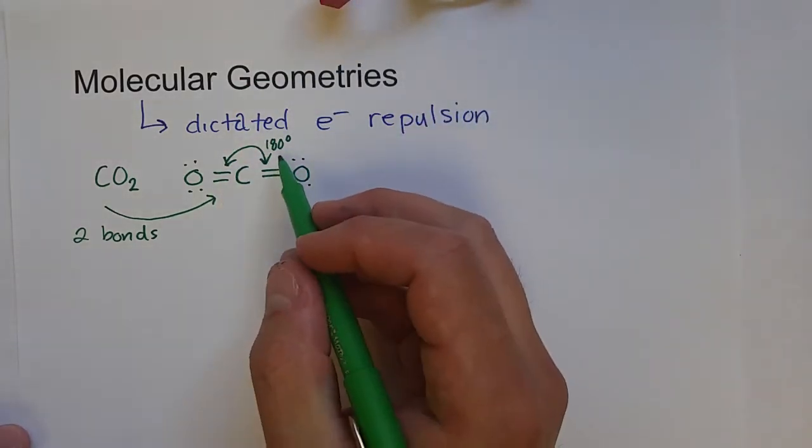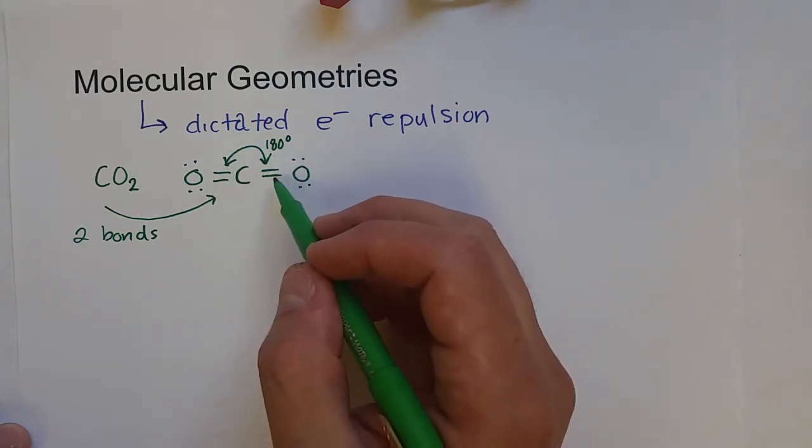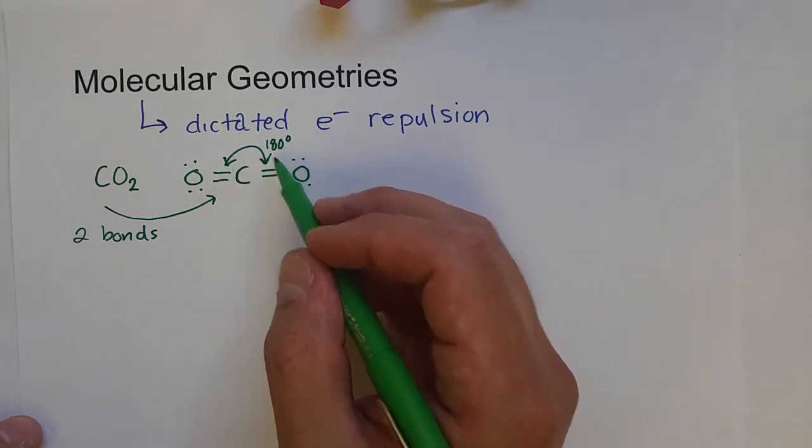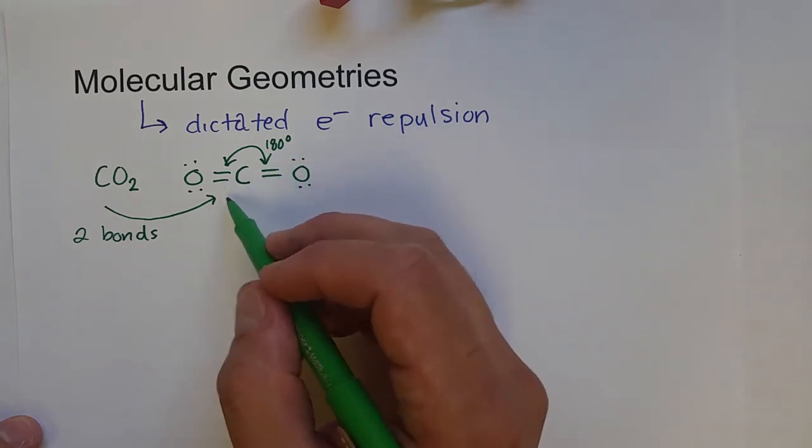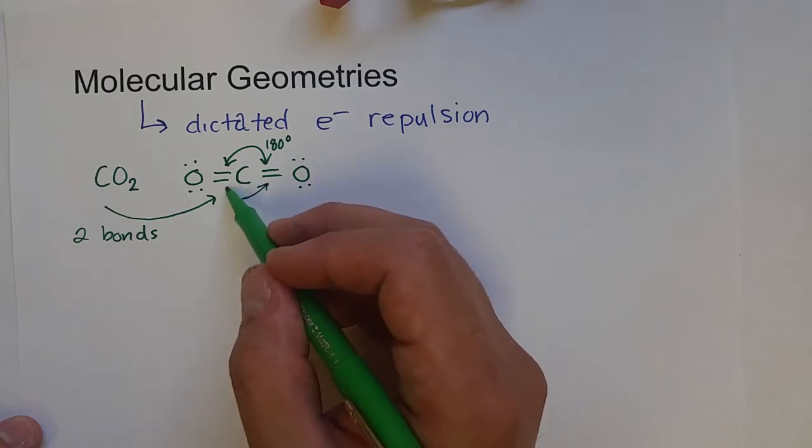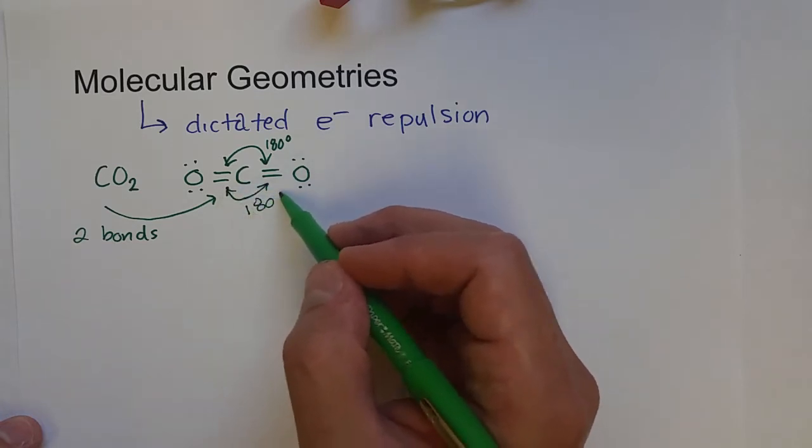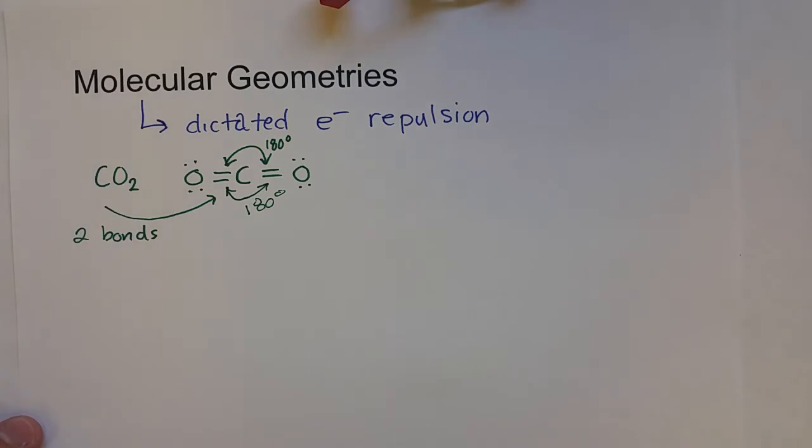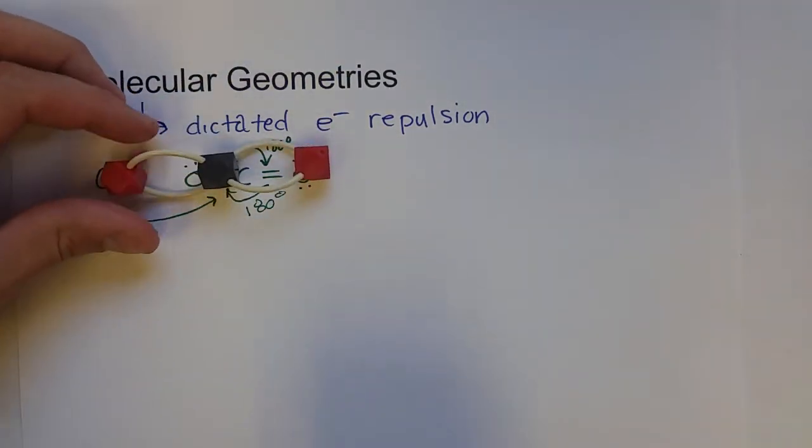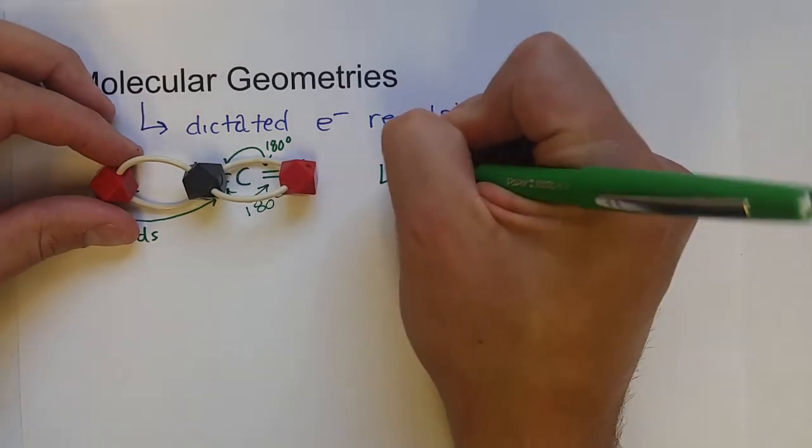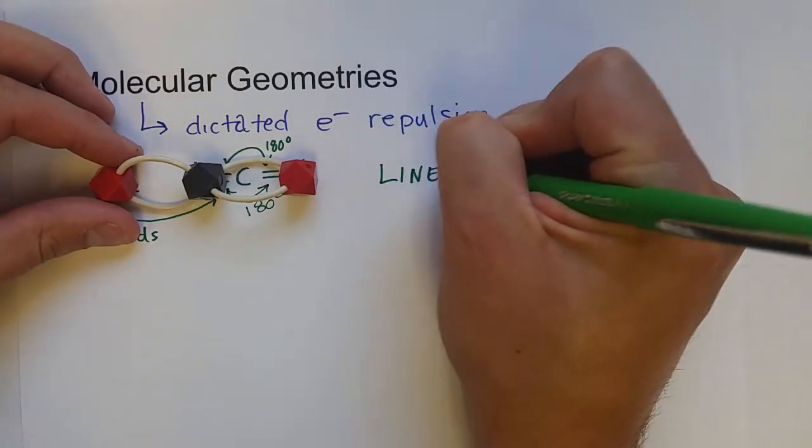That's the furthest they can repel each other. If these electrons in this double bond try to increase this bond angle, say, go down further, 181, 182, what happens is it decreases this bond angle. And so on average these will be 180 degrees apart. And since these atoms pretty much line up together, this molecular geometry is called linear.